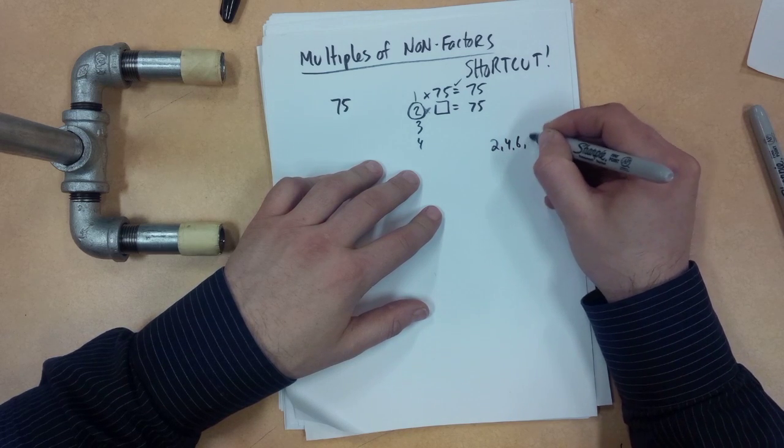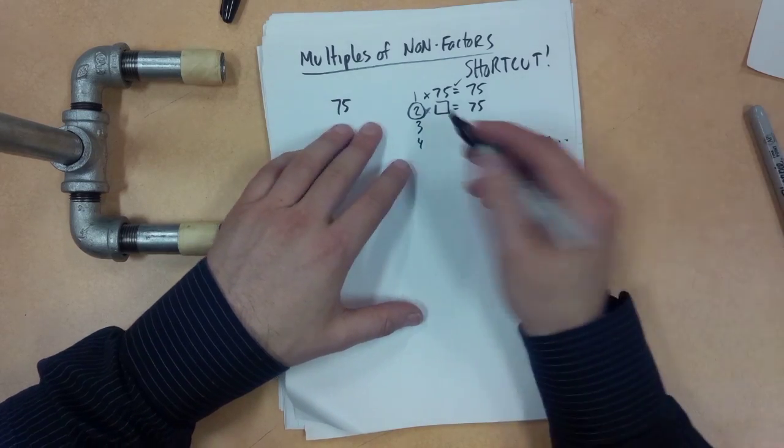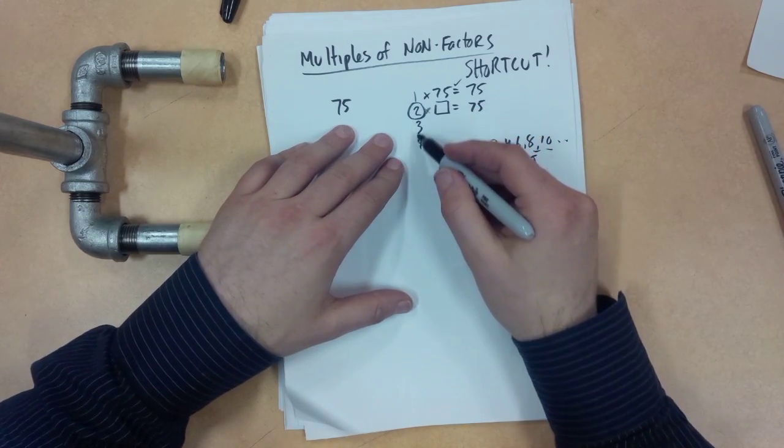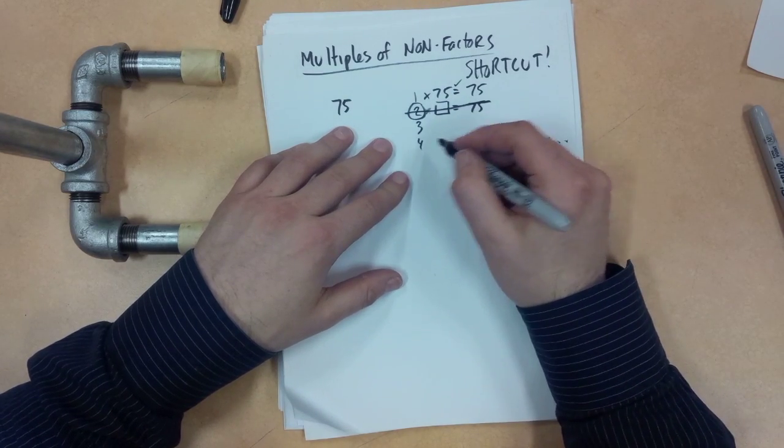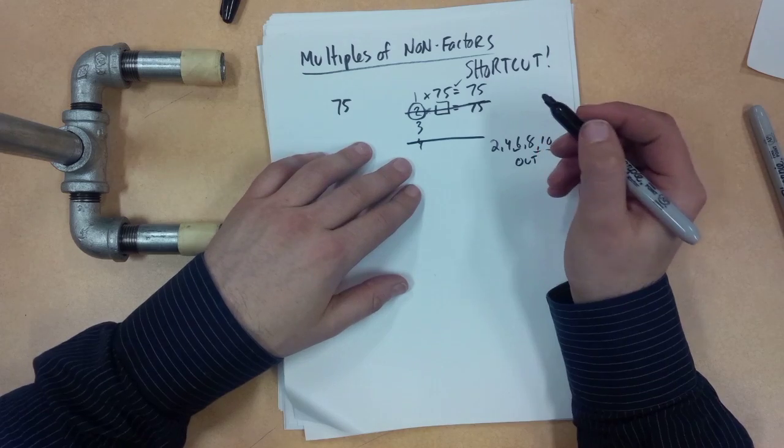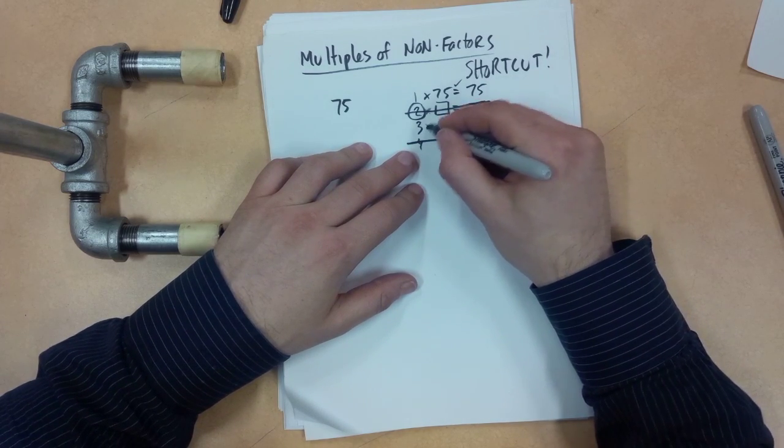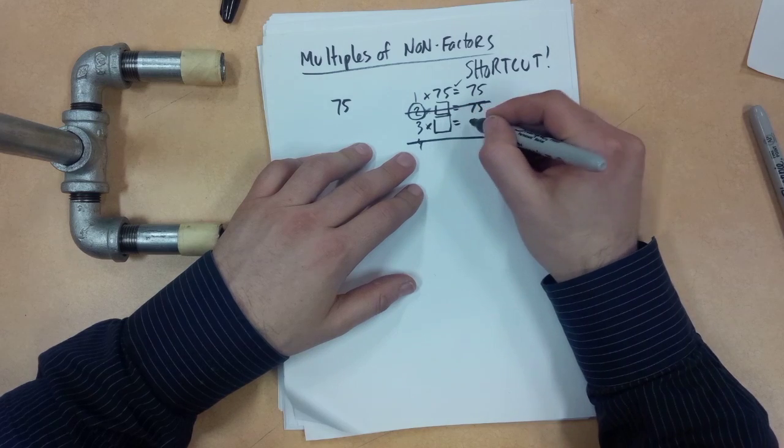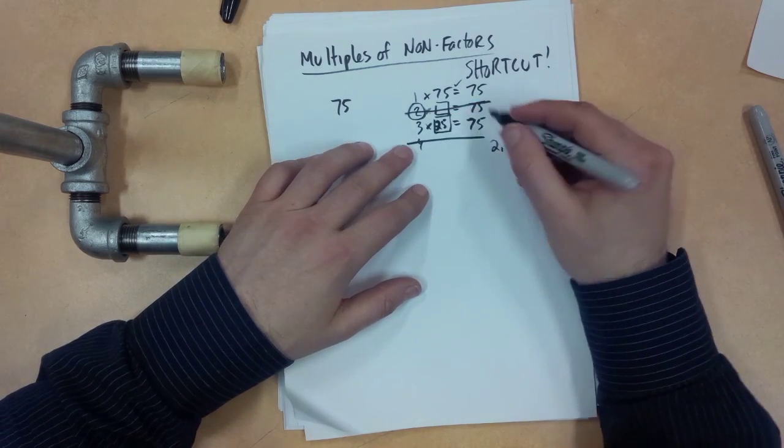2, 4, 6, 8, 10, and so forth, those are all out. So that saves me a lot of work. Instead of making my number list all the way down to like 75 or whatever, I know that all my even numbers I can just ignore. So 2 would be out, 4 would be out if I was to write it down. What about number 3? 3 times what gives me 75? I know the answer is 25 because that's a money thing. So 3 works.